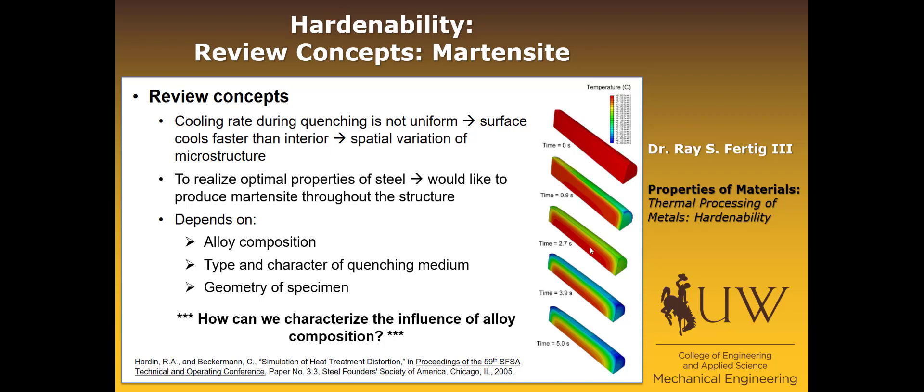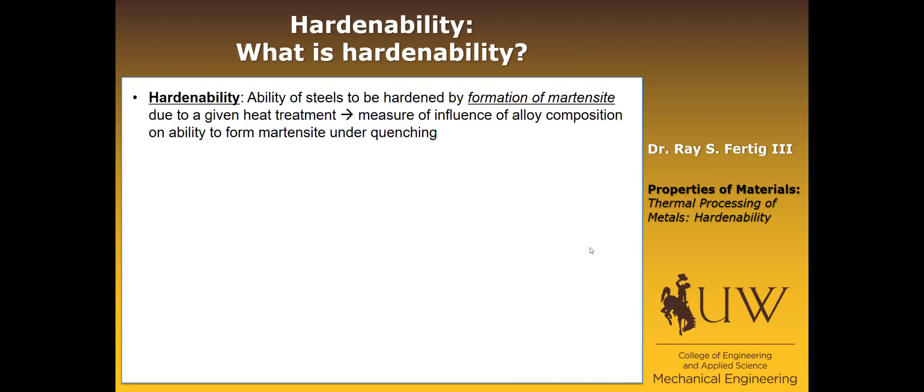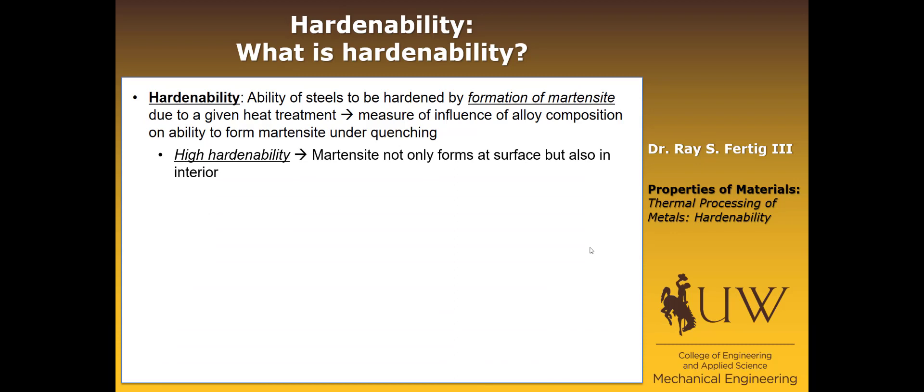Now we're set up to talk about hardenability. What is hardenability? It's the ability of steels to be hardened by the formation of martensite due to some fixed heat treatment. It measures the influence of alloy composition on the ability to form martensite under quenching. Something with high hardenability means that martensite not only forms at the surface but also forms in the interior — we're pushing the nose of that transformation further out in time so that slower cooling rates will still form martensite. Low hardenability means martensite only forms at the surface.